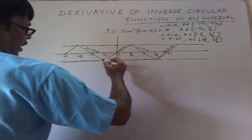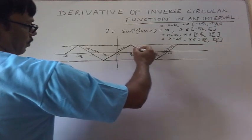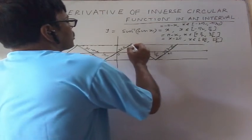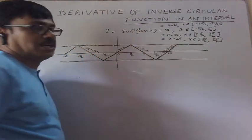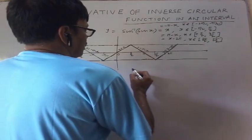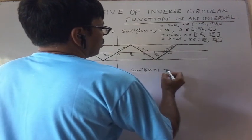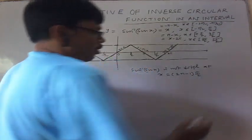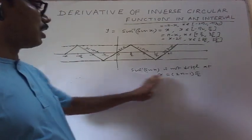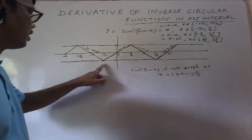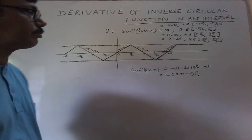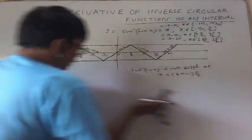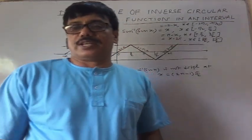From the graph: y = x between −π/2 and +π/2, then π − x, x − 2π, and −π − x. At x = π/2, −π/2, etc., there are sharp corners. So sin⁻¹(sin x) is non-differentiable at x = (2n−1)π/2, that is, at odd multiples of π/2. This is clear from the graph. Using this graph, you can differentiate inverse circular functions in any given interval.